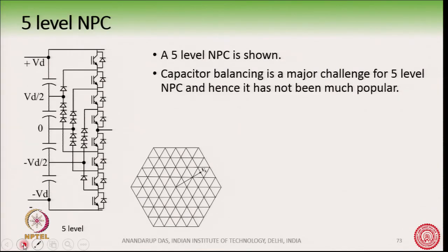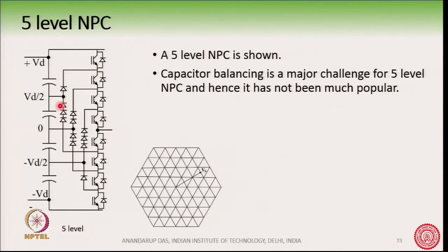How does a 5-level NPC look like? You can see it here in this circuit — one phase is shown. You can see that there are 8 switches for the 5 levels and there are also clamping diodes — several clamping diodes. You have the +Vd voltage, the −Vd voltage, and the 0 point, like a conventional 3-level NPC.